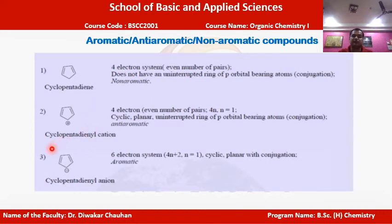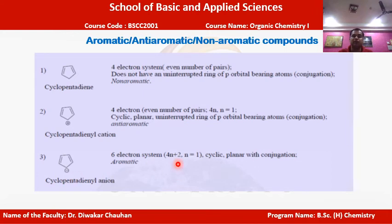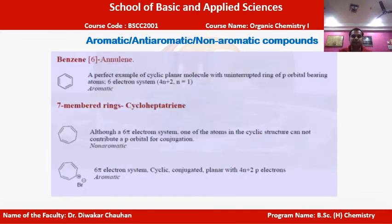Cyclopentadienyl anion has two pi bonds giving four pi electrons, plus two more electrons from the negative charge, totaling six pi electrons. This follows the 4n+2 rule (Hückel's rule). With continuous conjugation and six pi electrons, this compound follows Hückel's rule and is aromatic in nature.